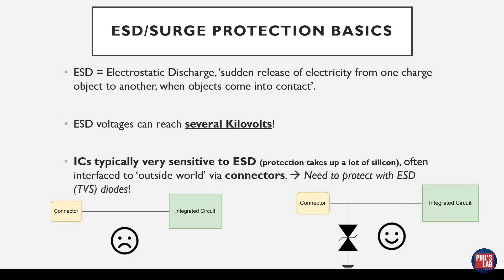Integrated circuits are typically very sensitive to electrostatic discharge because ESD protection is not usually included, and if it is, only to a small extent, because this protection takes up quite a lot of silicon real estate. Therefore we often need to place external ESD protection. ICs are typically interfaced with the outside world via connectors, and we need to place ESD protection pretty much right at the connectors. One of the most common ways of protecting against ESD strikes and surges is via the use of TVS diodes or ESD diodes.